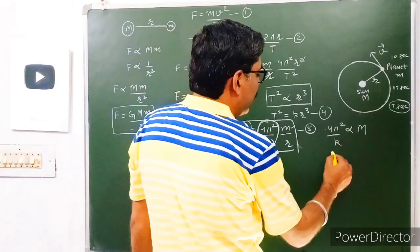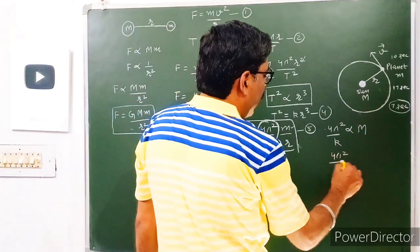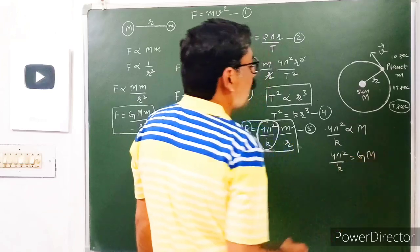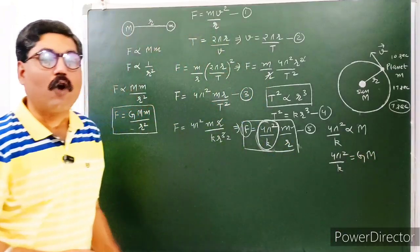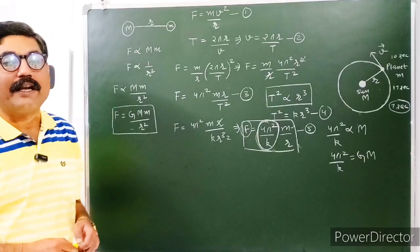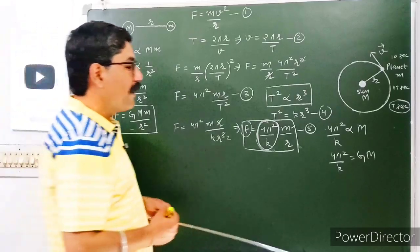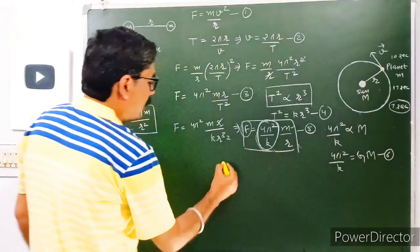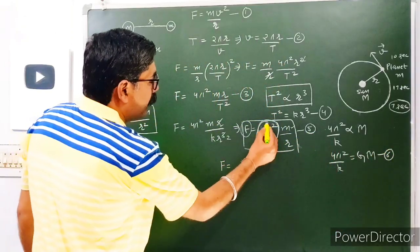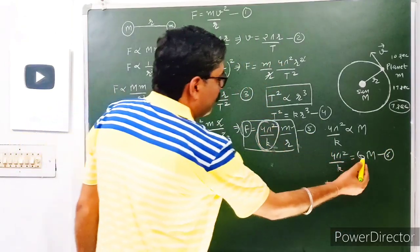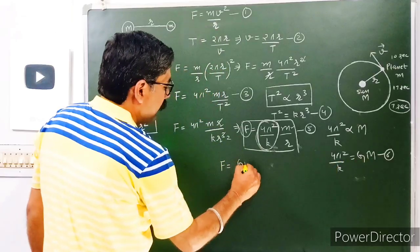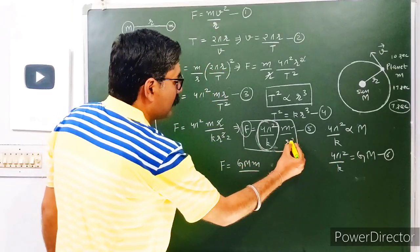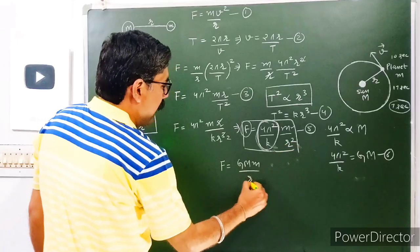When you remove the proportionality sign, you get 4π²/k = GM, where G is the constant of proportionality — the universal gravitational constant. Substituting this value from equation 6 into equation 5, you get F = (4π²/k) × m/r², which becomes F = GMm/r².